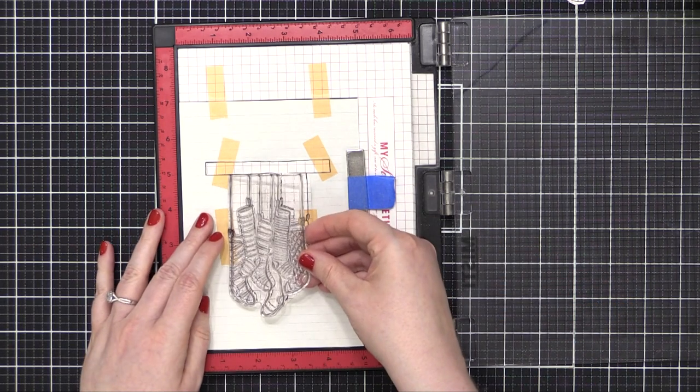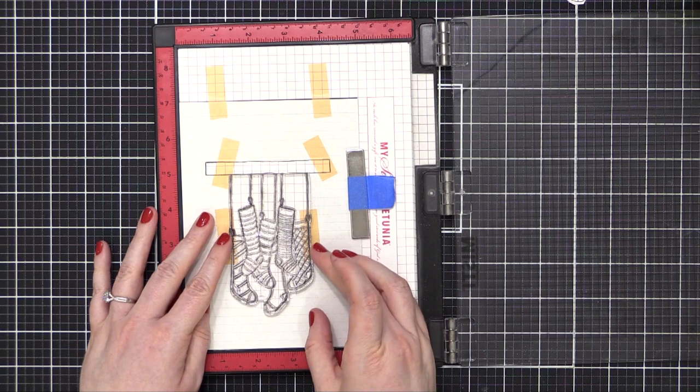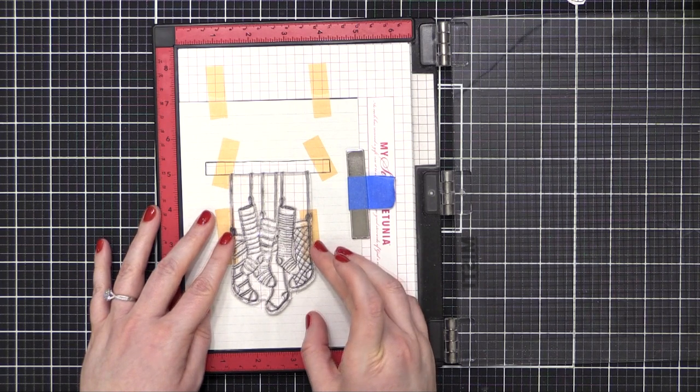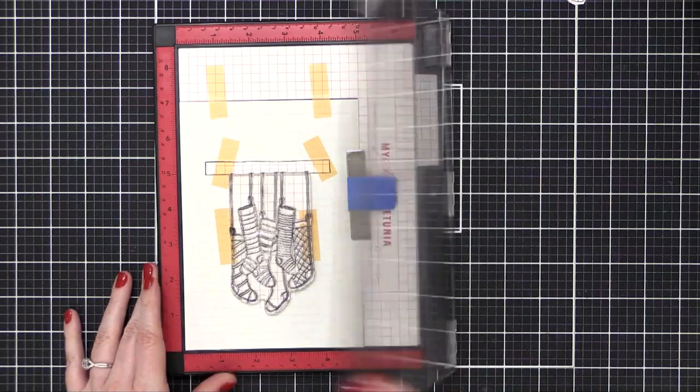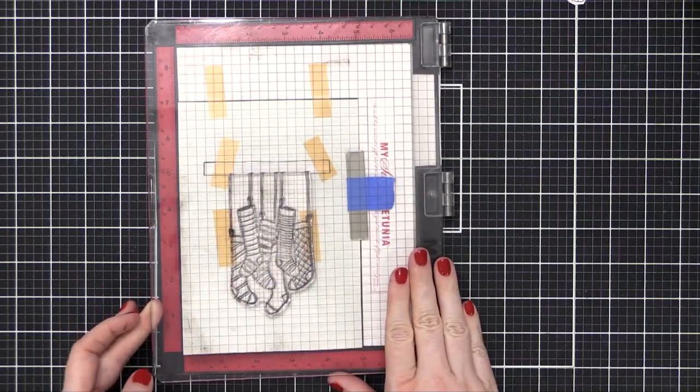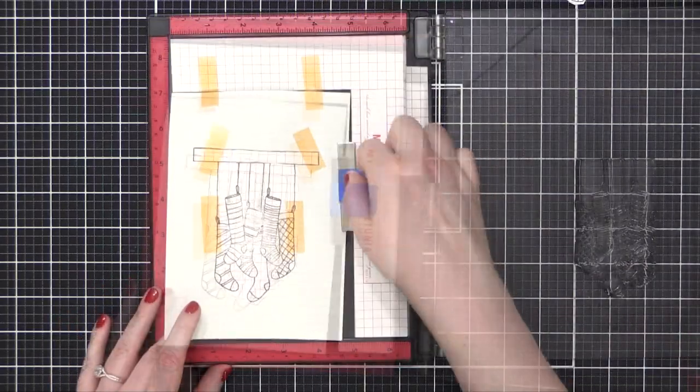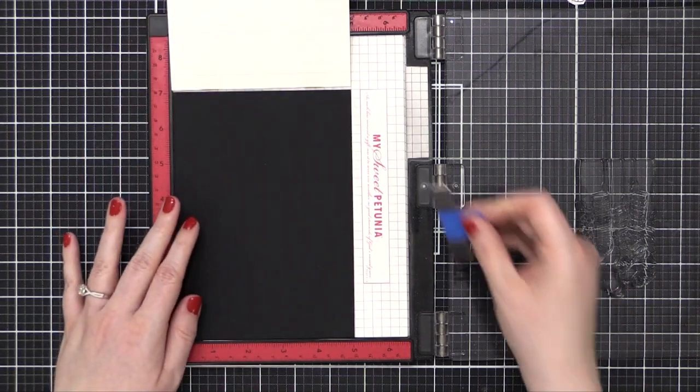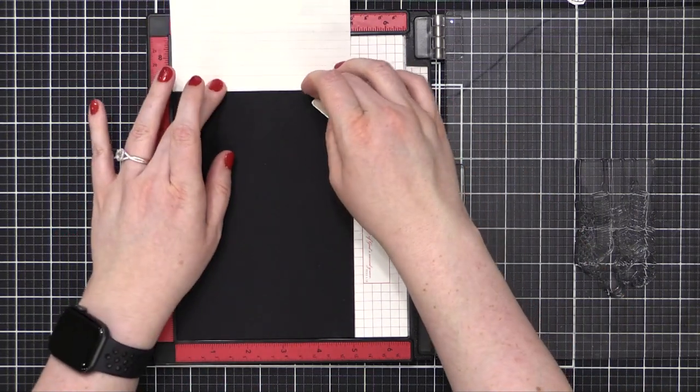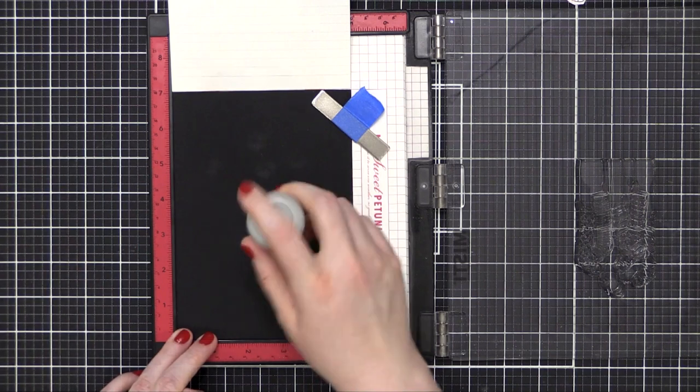I placed the image from the stamp set over top of my stamp map. That's going to help me get the positioning just right, and then I can close the door of my Misti and it transfers the stamp to the door. I can now flip up that stamp map and stamp directly down onto my black watercolor paper.